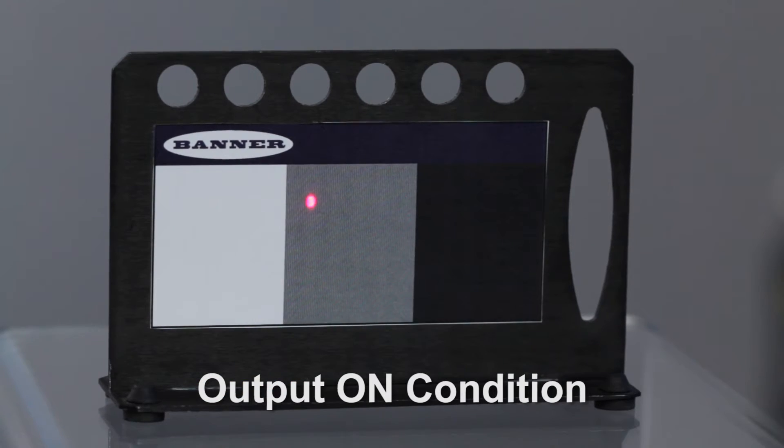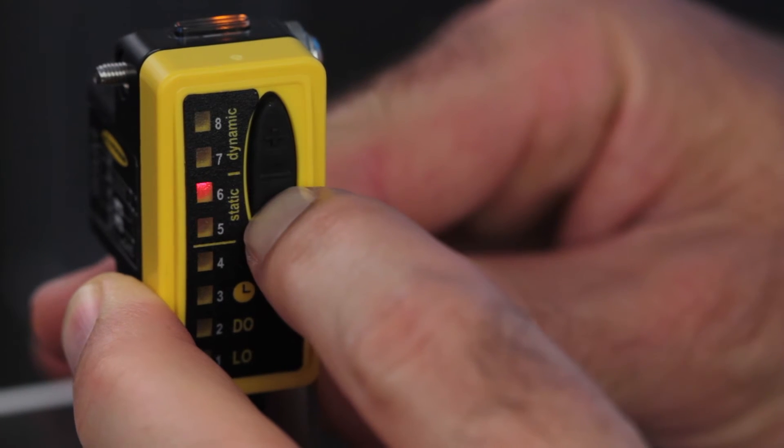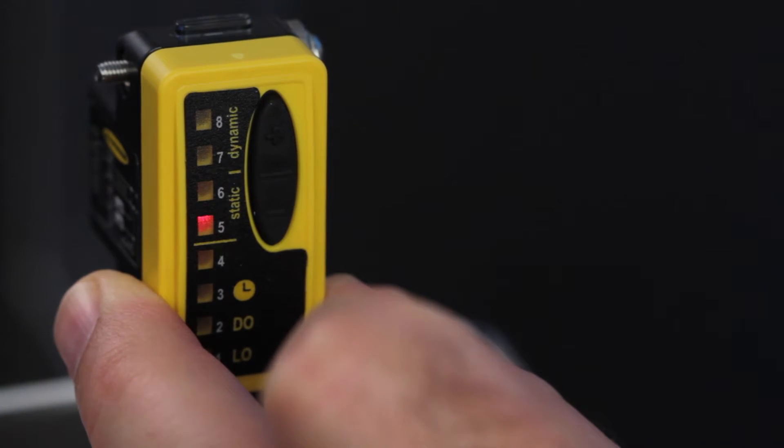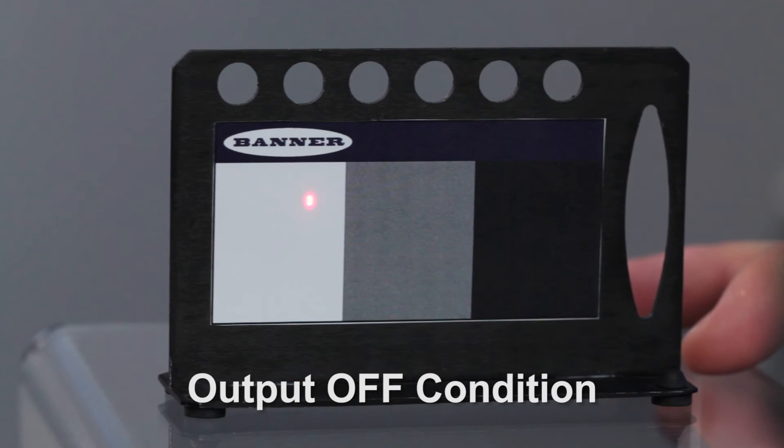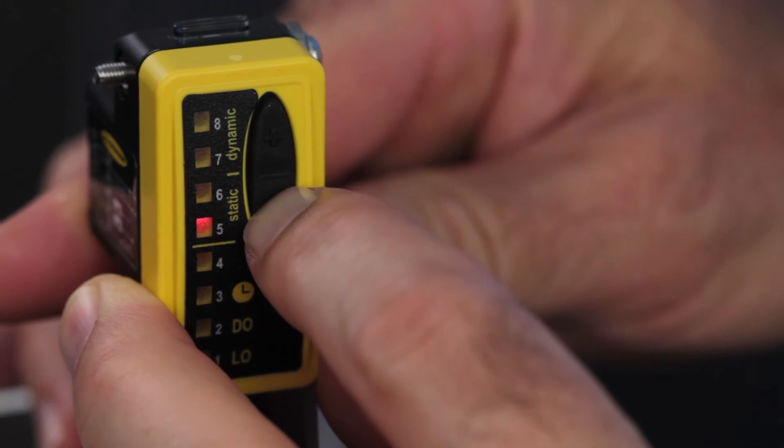Present output on condition and click the minus button. Present the second output off condition and click the minus button.